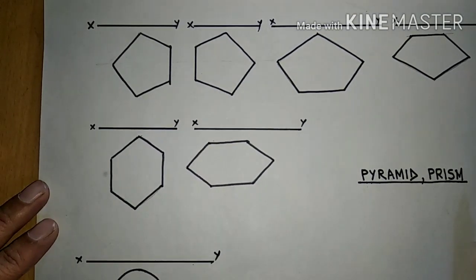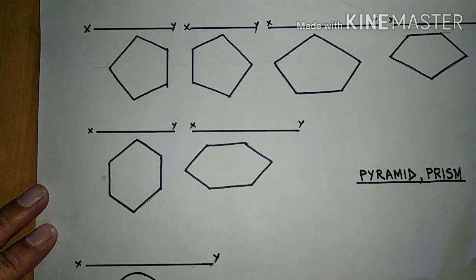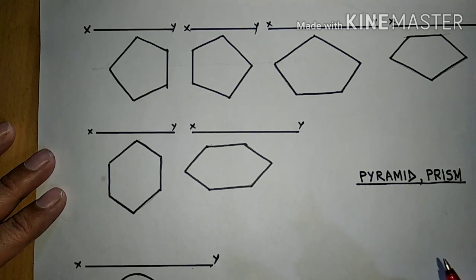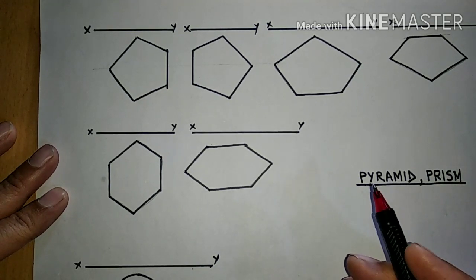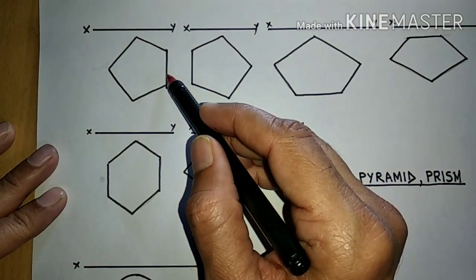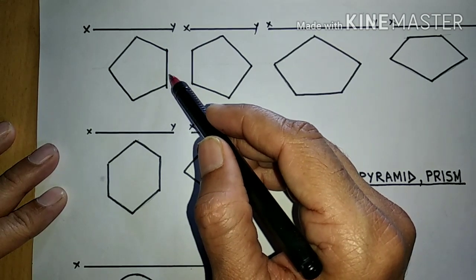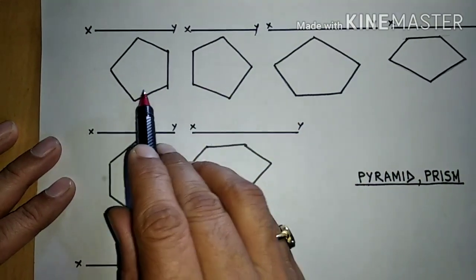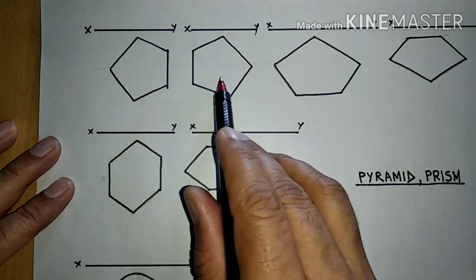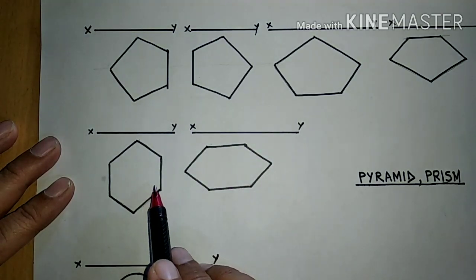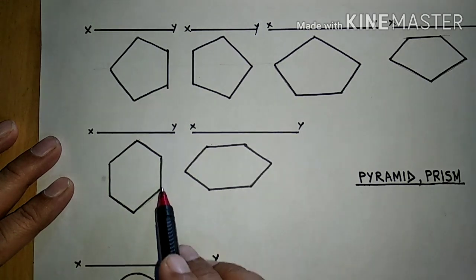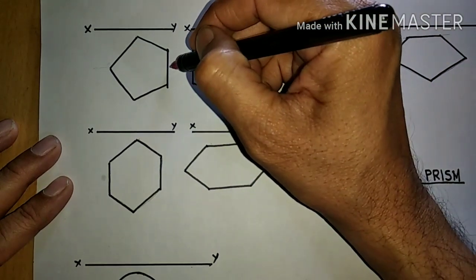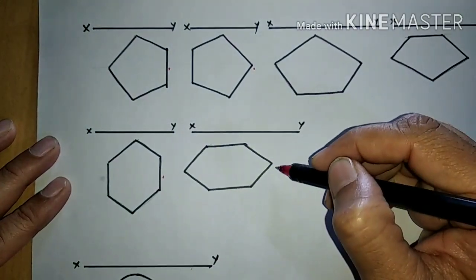In projection of solids, we have seen various positions in stage one. When drawing the first stage, we keep the important part of the object on the right-hand side. If base edge is in HP, we keep that base edge on the right-hand side. If a corner is in HP, we keep the corner on the right-hand side. So in projection of solids, we dealt with these two positions for pentagonal and hexagonal pyramids.